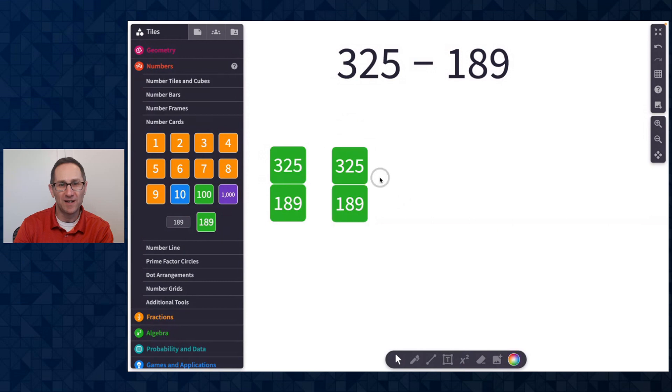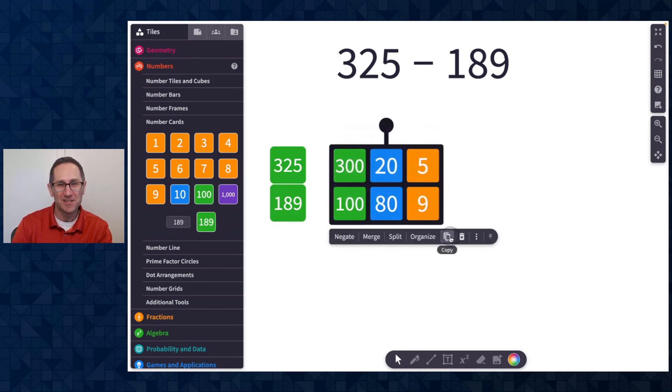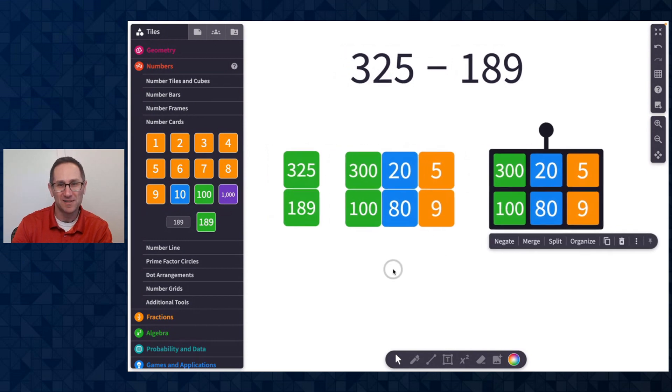A really nice feature with these number cards is the ability to split them. So I'm going to click on 325, click split, and you can see it splits the card into 325. I'll do the same thing here, splitting 189 into its base 10 representation. And then just to keep track of my work, I'm going to copy and put a set over here.